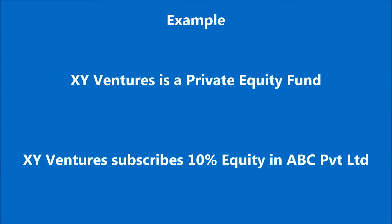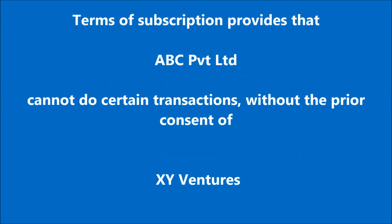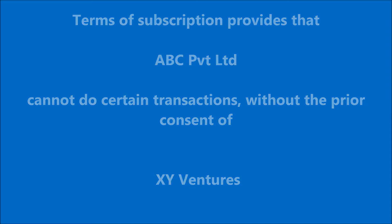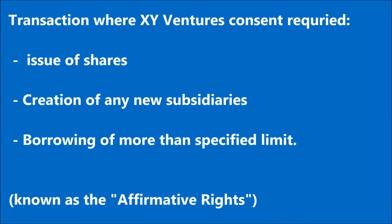Let's take an example. XY Ventures is a private equity fund, and this private equity fund subscribes to 10% of the equity share capital of ABC Private Limited. As per the terms of the agreement executed for this subscription, ABC Private Limited cannot do certain transactions without the prior consent of XY Ventures. Those transactions are: any issue of shares, creation of any new subsidiaries, and borrowing of more than a specified limit.